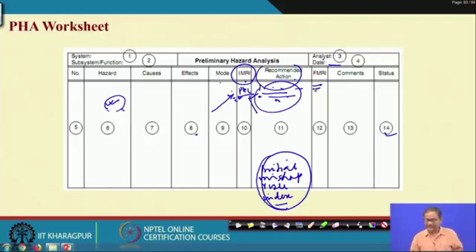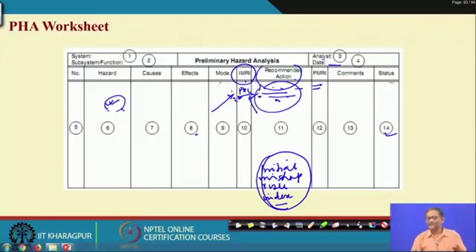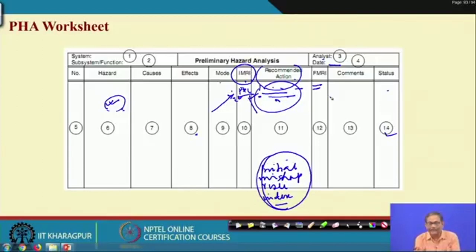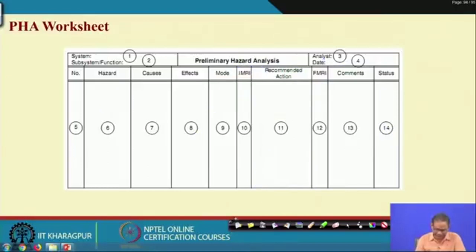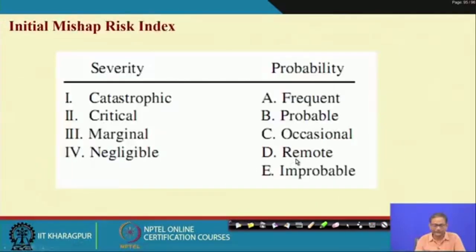Once preventive and mitigative measures are identified, both P and C values are reduced. You document the recommended measures, then include comments on implementation feasibility and cost, and under status you write 'closed' if implemented or 'open' if not. In PHL there were 5–6 documentation items, but in PHA there are 14 items per hazard — 4 common items and 10 hazard-specific items.